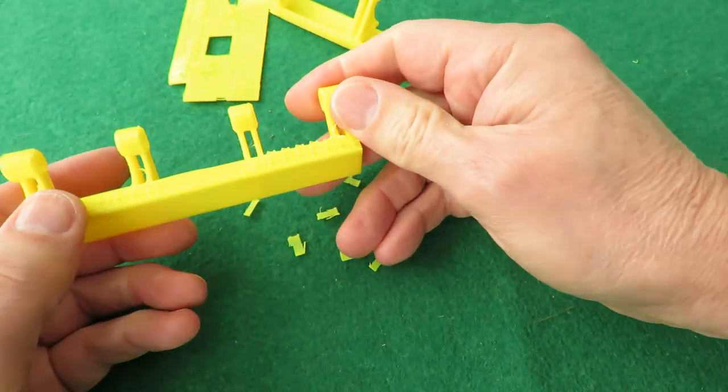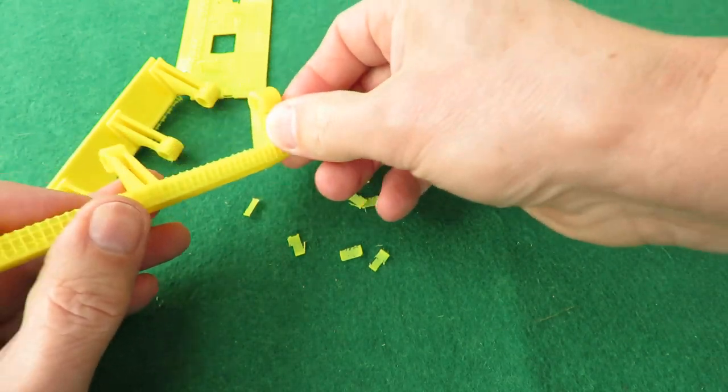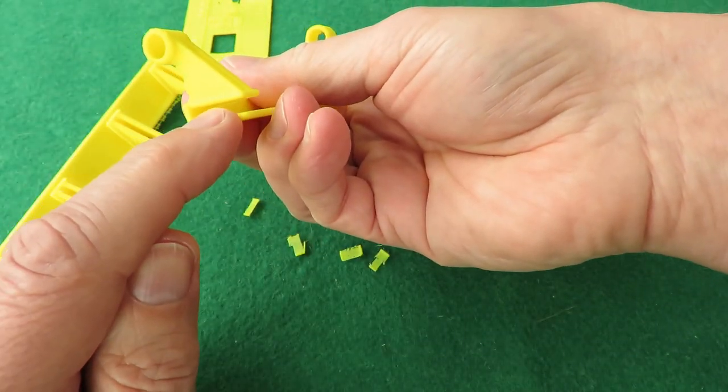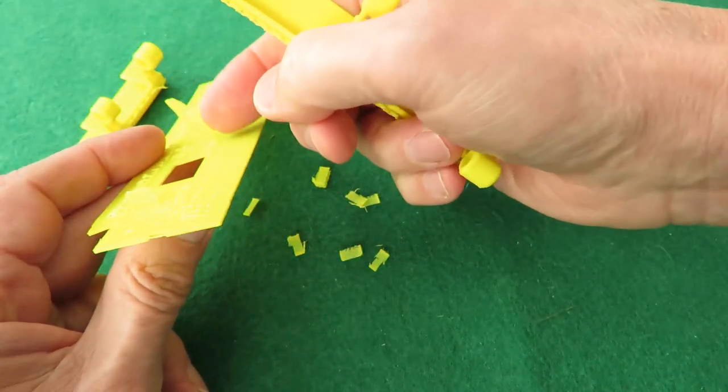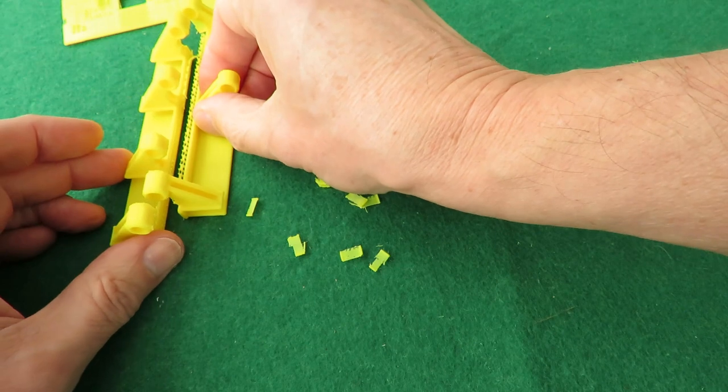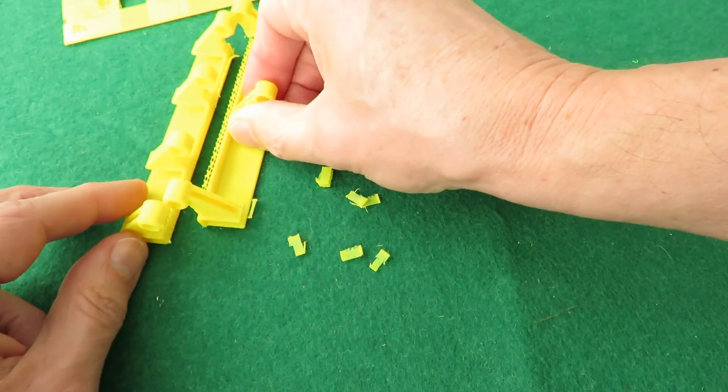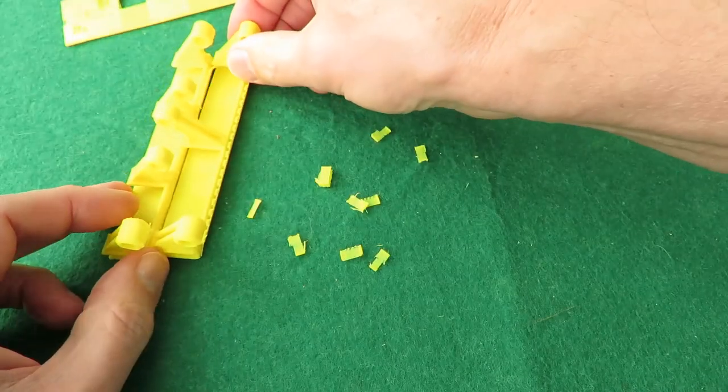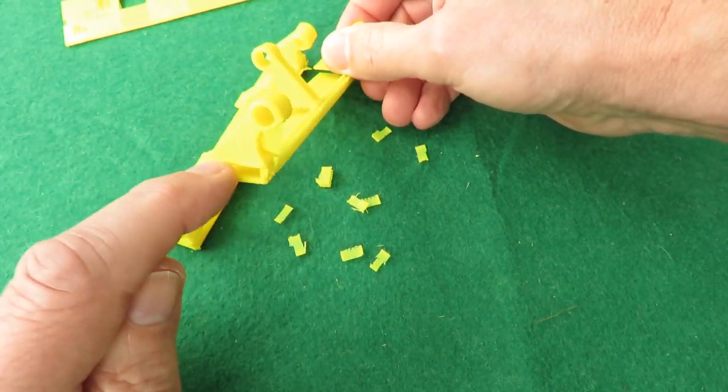I think it also depends which slicer you use. I'm using the one that came with the printer, the Creality Ender 3. And that didn't seem to recognize that these bits needed supporting. It seemed to be only in relation to the ground. So it put these ones in. But when I had these that way on the printer, it didn't put them under here. So if I'd have printed it that way, which is how I did it before, it would have had the mess under here.